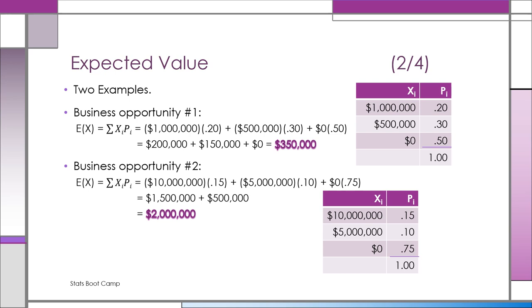That's called the expected value of X. And it turns out for this problem, the expected value of X is $350,000. If you were able to do this business deal over and over again, you'd average out making $350,000.